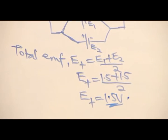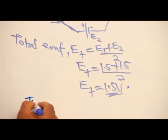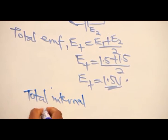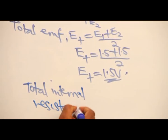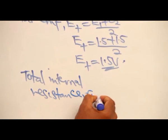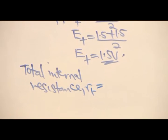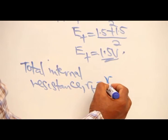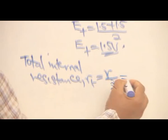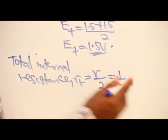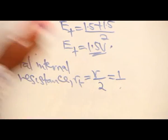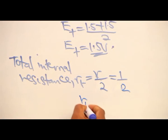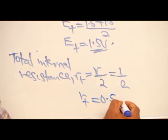Total internal resistance represented by R total. We use simple method. It's the internal resistance of 1, since they are equal, divided by 2. 1 divided by 2. A total internal resistance of 0.5 ohms.